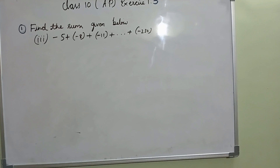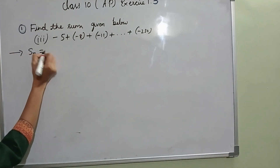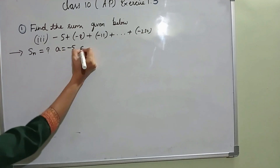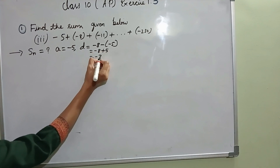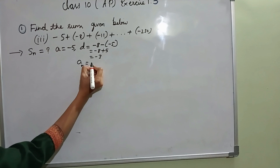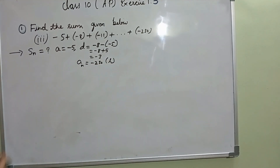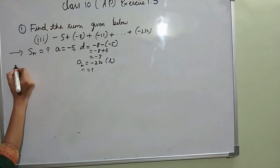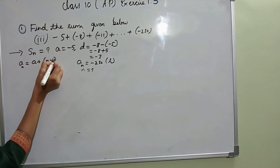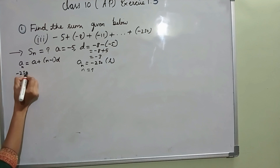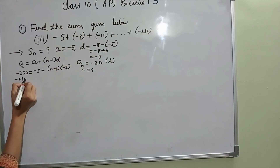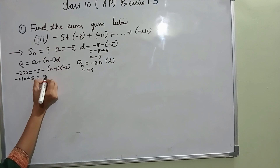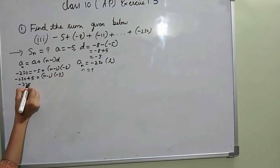Find the sum given below. Here also we need to find SN. A is minus 5. D is second term minus first term: minus 8 minus into minus plus minus 3. The last term AN equal to minus 230. N I don't know. So before finding SN, we need to find N. Using the nth term formula: AN equal to A plus N minus 1 into D. AN is minus 230, A is minus 5, D is minus 3. Minus 230 plus 5 gives minus 225 equal to N minus 1 into minus 3.